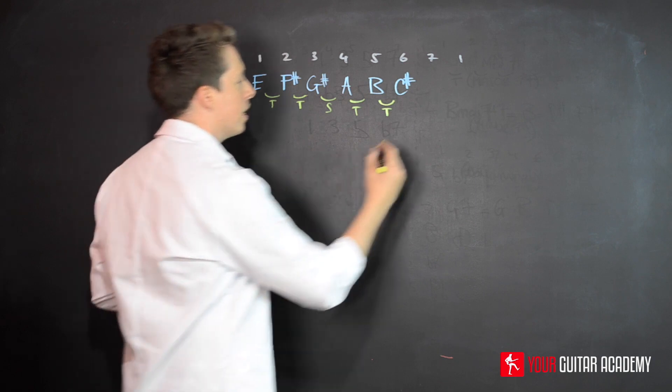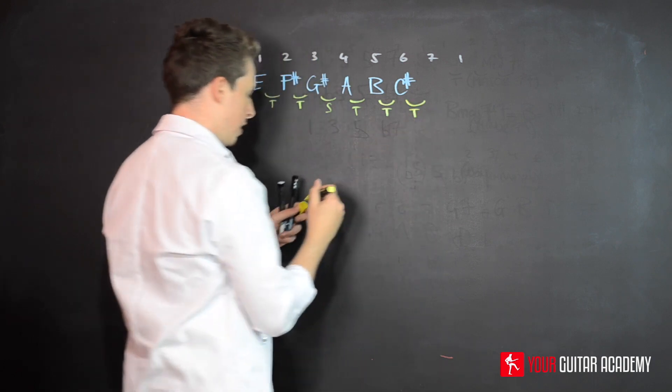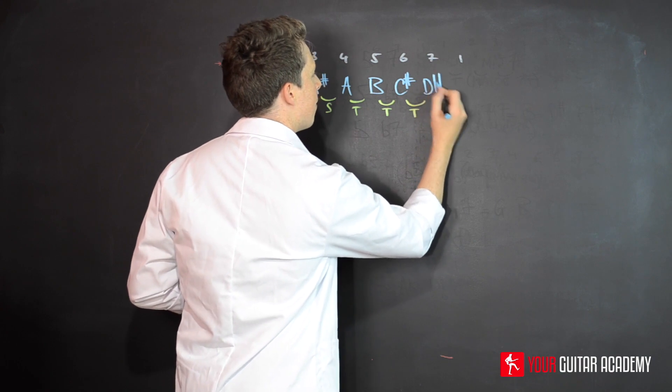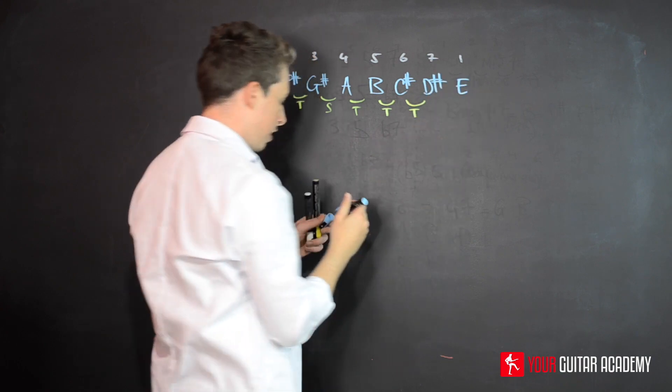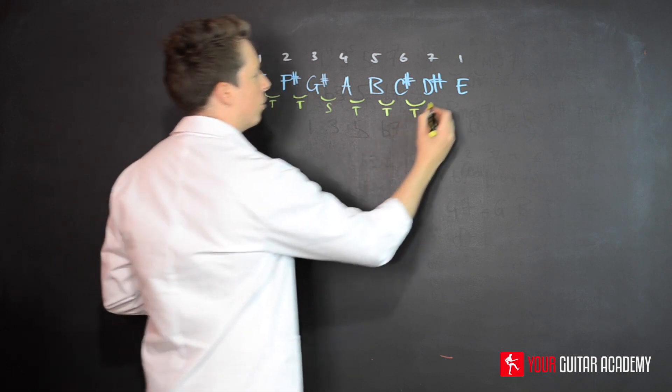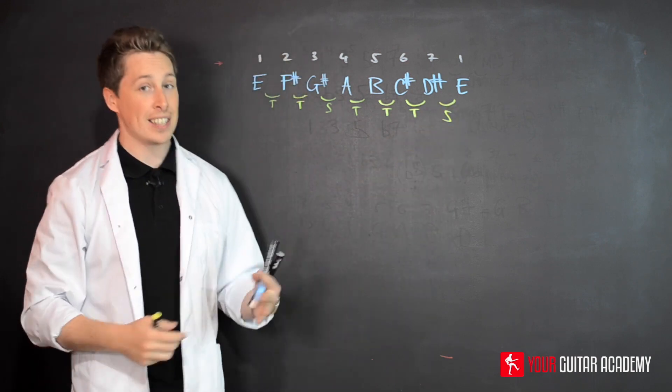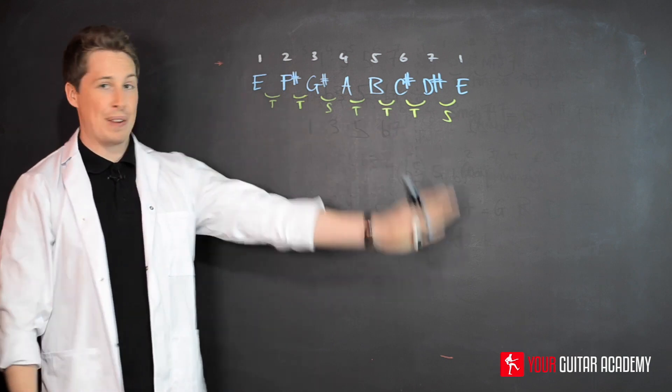Remember there's no B sharp, it doesn't exist, so we go straight C and then C sharp. Then we're going to go one more tone up, which is going to be D sharp, and then finally that will bring us back to the E, which is a semitone up from there.